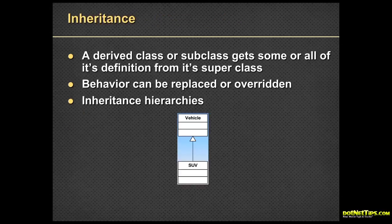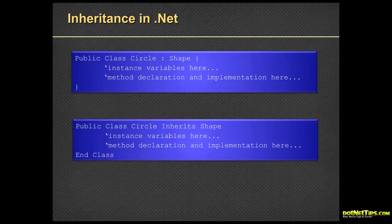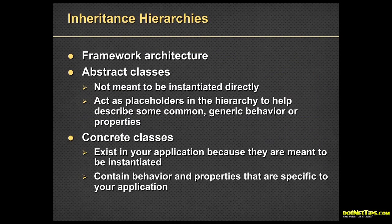Inheritance works. The derived class or subclass gets all or some of its definitions from the super class. And the super class is the base class, basically. Behavior can be replaced or overridden if that's allowed, and if you choose to do it, it's totally up to you. You have a vehicle class. SUV inherits from vehicle and then automatically gets everything vehicle has and whatever you add on top of it. This is how inheritance works. Public class circle inherits some shape in C-sharp. In VB, we actually say public class circle inherits shape.